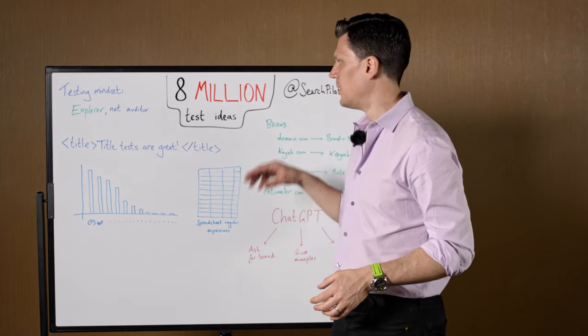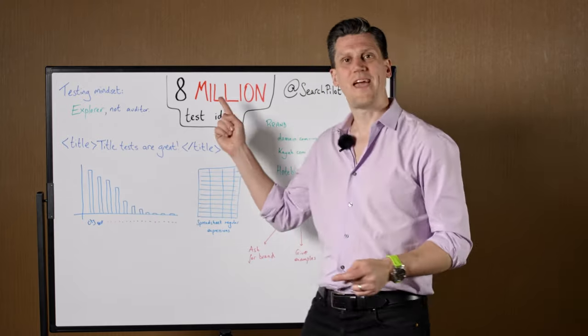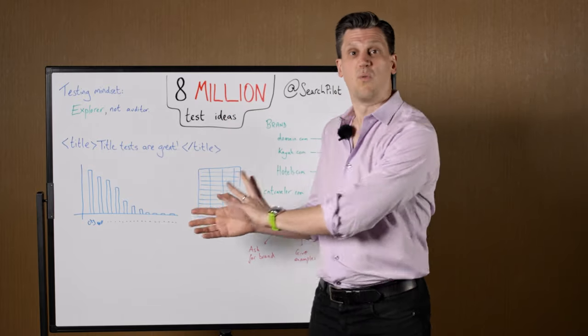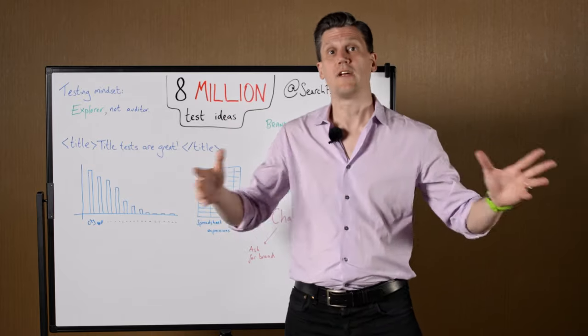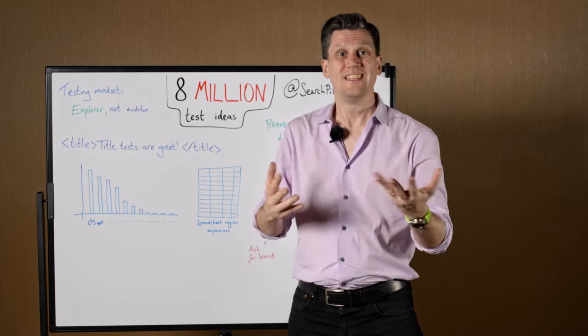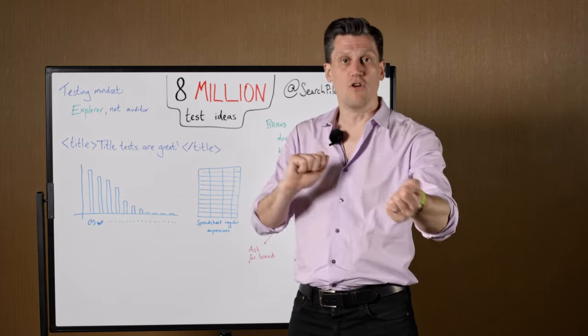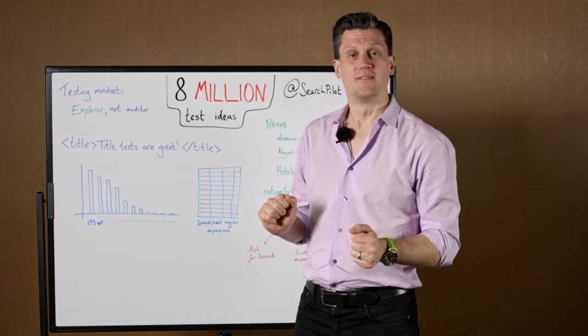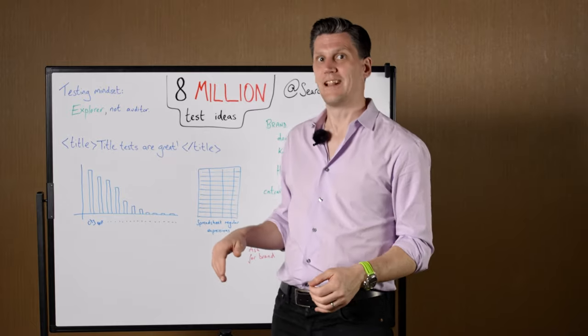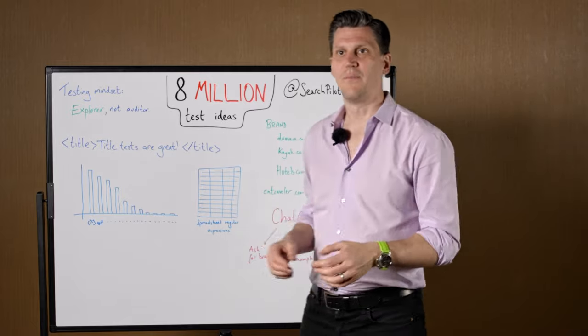This is where the 8 million comes from. The way I've put this together right now, it has 23 columns. There are 23 different things that you may or may not include in a title. And 2 to the 23 is 8 million and a little bit. So you even get some bonus ones above that 8 million.